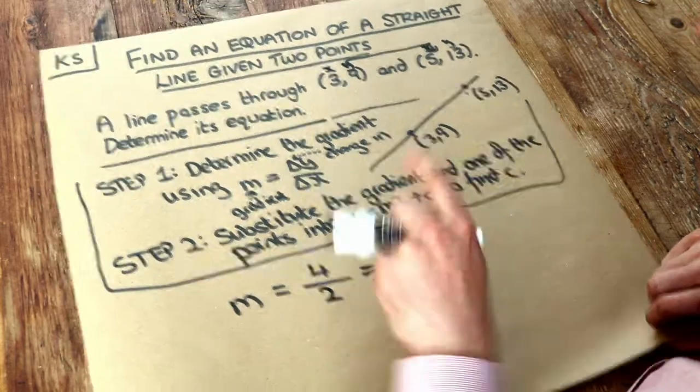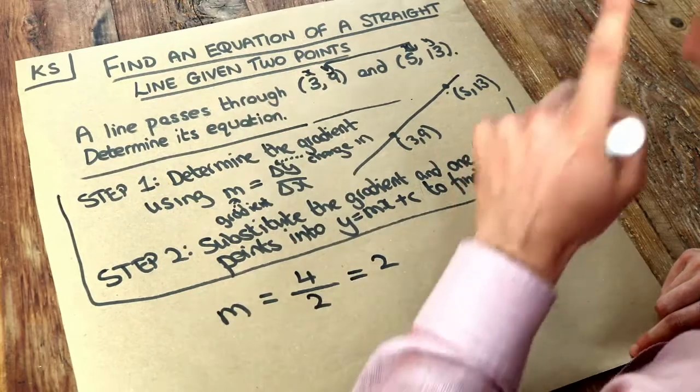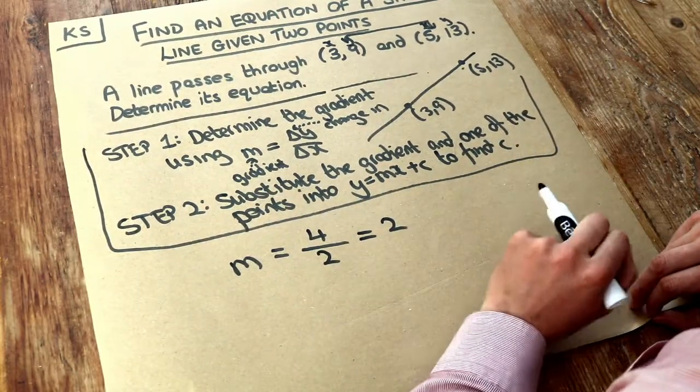And we explored in a previous video that if we had the gradient of the line and we had a point on the line, then we know how to find the equation. We're just going to substitute everything into y equals mx plus c to find out what c is.